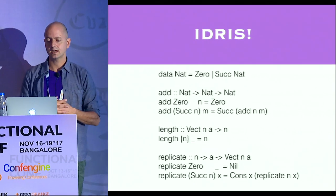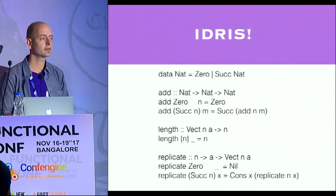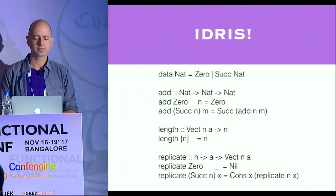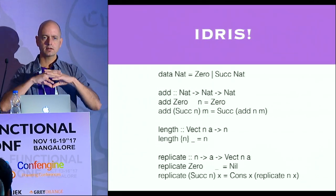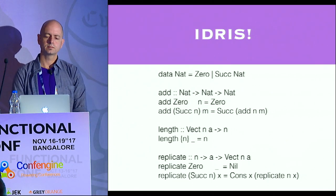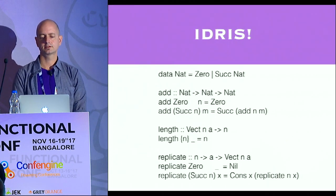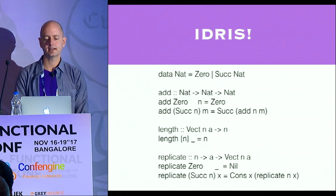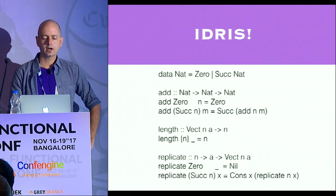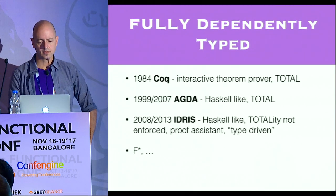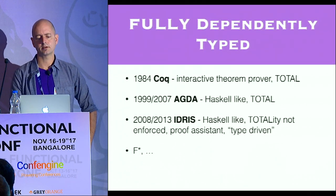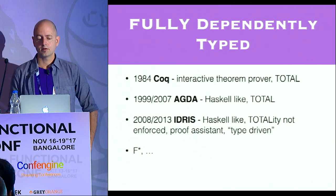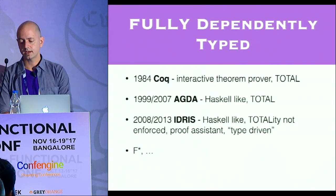Idris is kind of like this beautiful, shining, polished gem of where Haskell is heading — although Haskell will never quite reach it. There are other dependently typed programming languages, fully dependently typed. Coq is the oldest one — from 1984, very old, precedes Haskell by a few years.